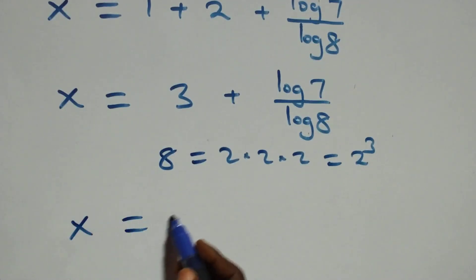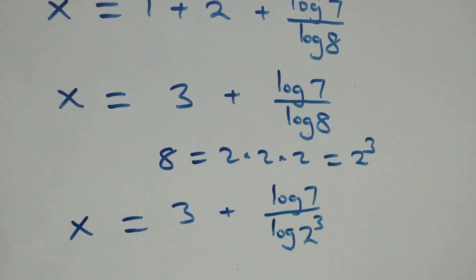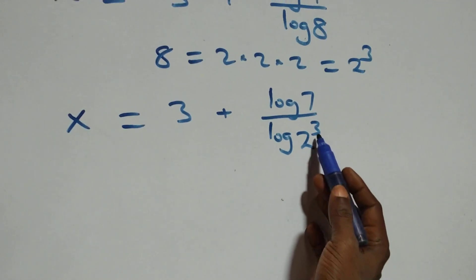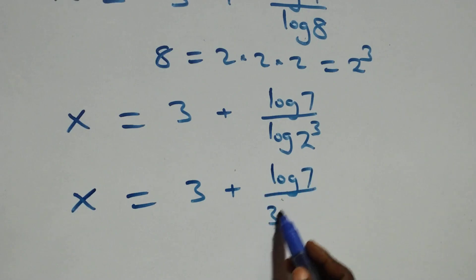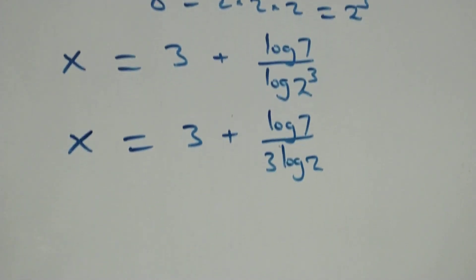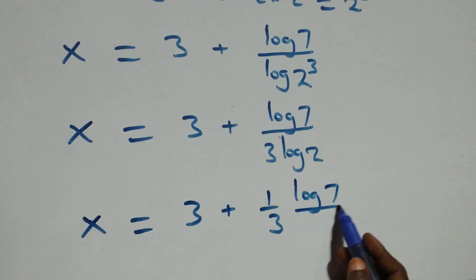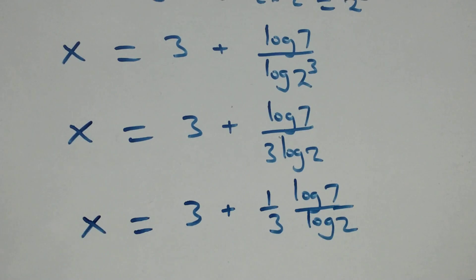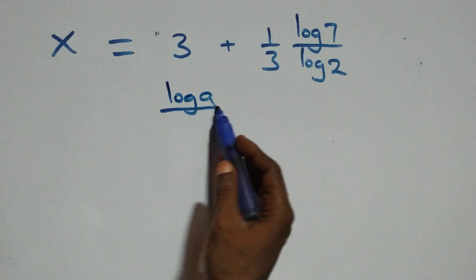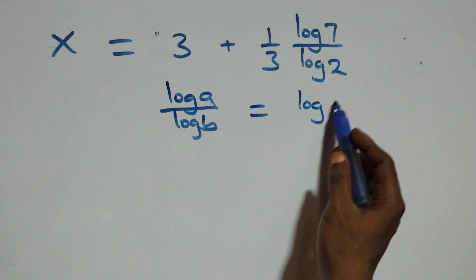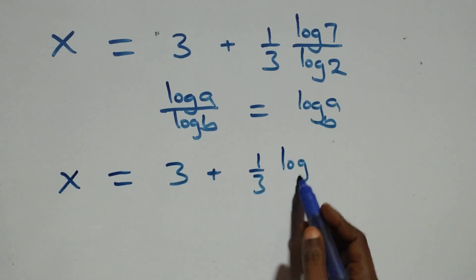What we have becomes x equals 3 plus log 7 over log 8. We apply the change of base rule: log 7 over log 8 equals log 7 over log 8, and since log 8 equals 3 times log 2, this can be written as x equals 3 plus one-third times log 7 over log 2. That is the same thing as log base 8, which is log 7 base 2 scaled by one-third.